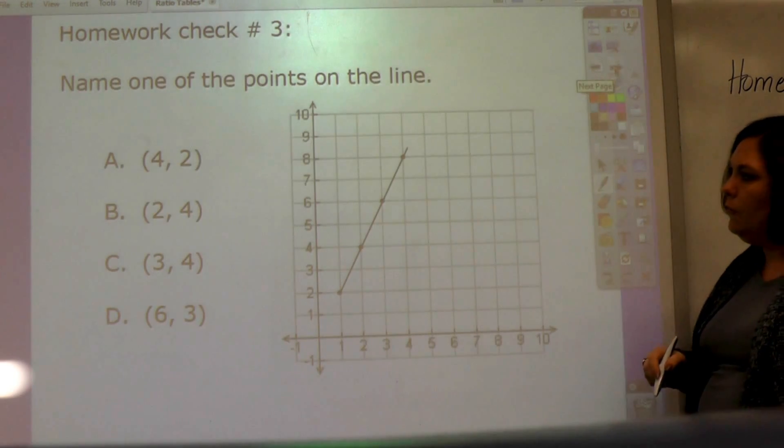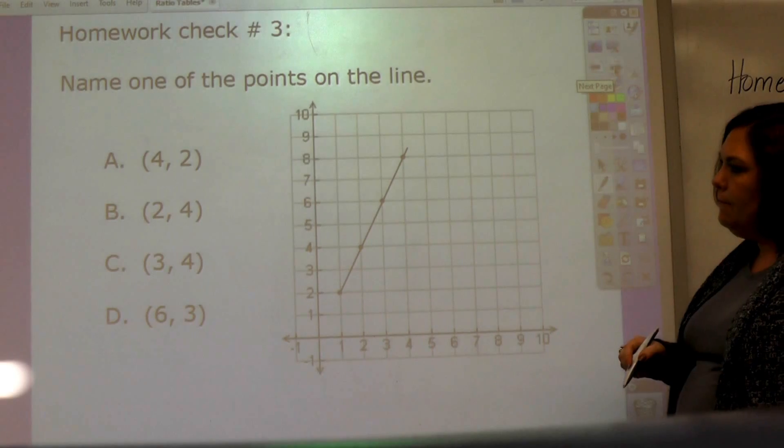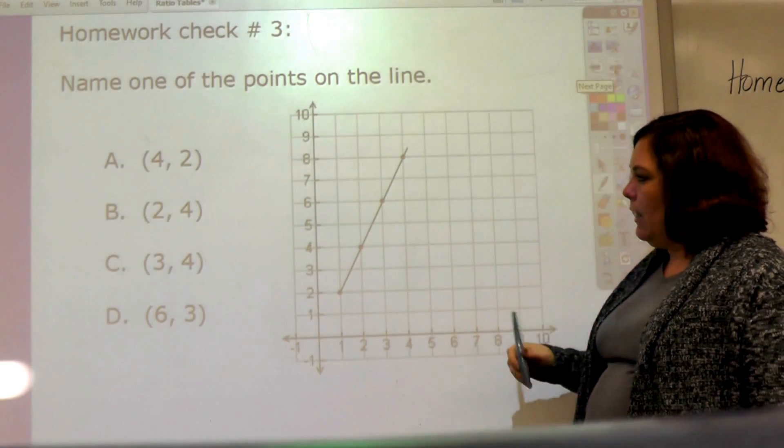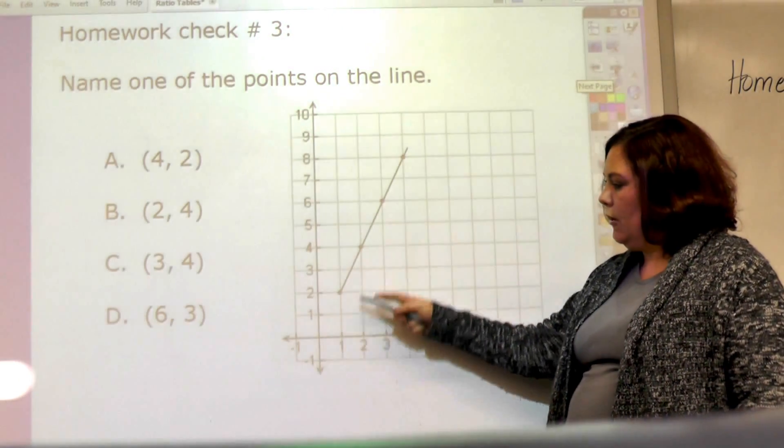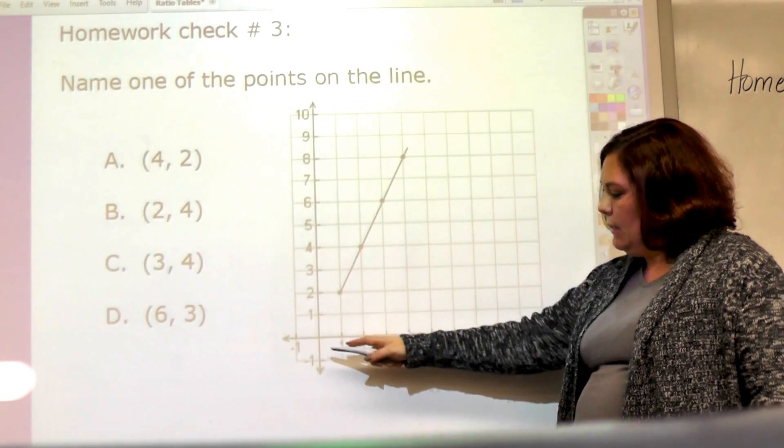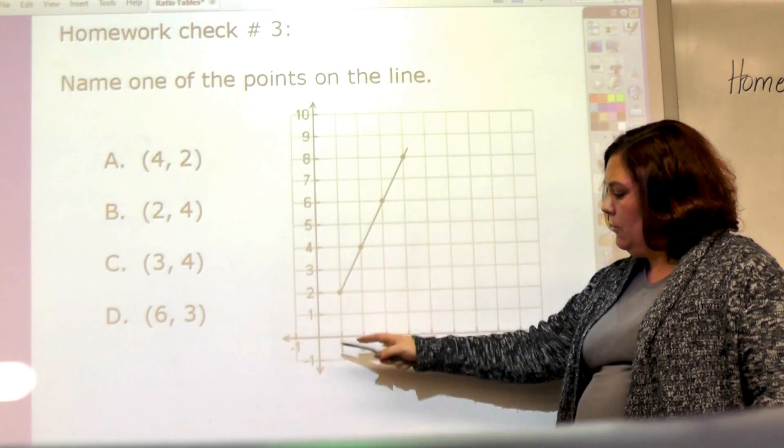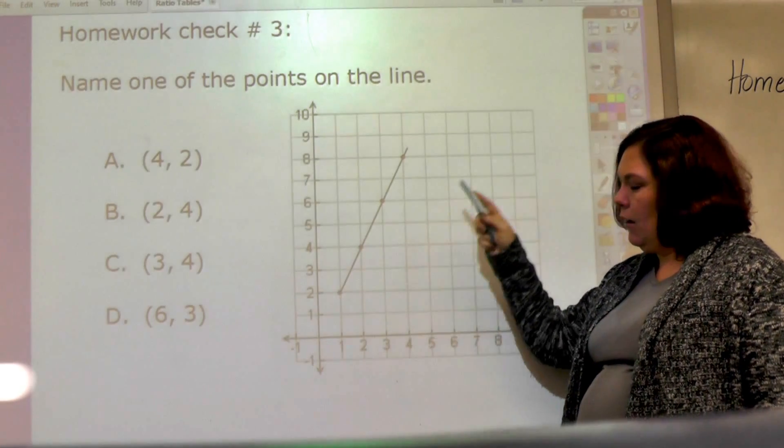The last one is homework check number 3: name one of the points on the line. You have your choices here. Here's the line, and it goes 1 to 2, 2 to 4, and on up.